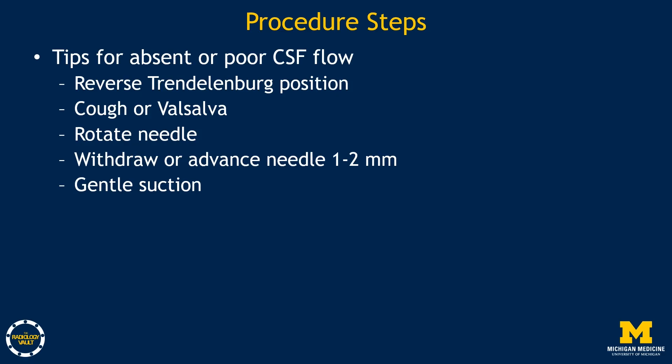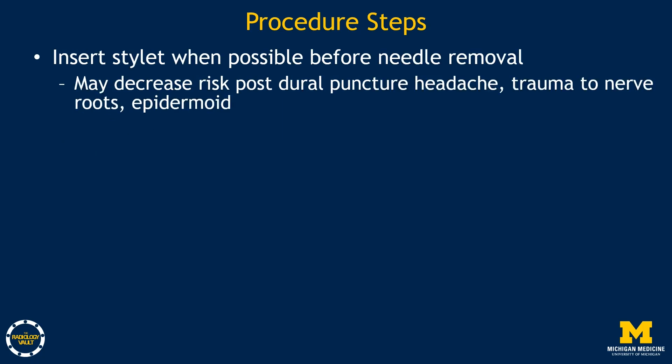If there is absent or poor CSF flow, the following steps can be attempted. The patient can be placed in the reverse Trendelenburg position to allow CSF to accumulate in the distal thecal sac. The patient can cough or valsalva. The needle can be carefully rotated 360 degrees or withdrawn or advanced 1 to 2 millimeters with the stylet in place. Some radiologists perform gentle suction on the needle hub through tubing; however, this should be performed with great care. The stylet should be inserted into the needle before removal if possible, as this may decrease the risk of post-dural puncture headache, trauma to nerve roots, and the formation of an epidermoid.